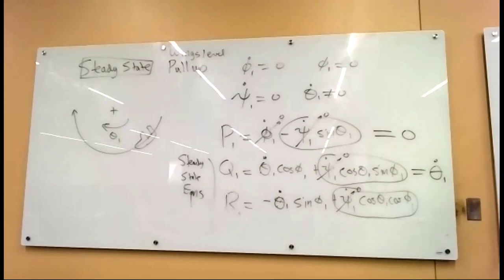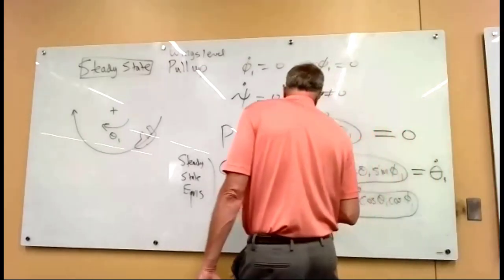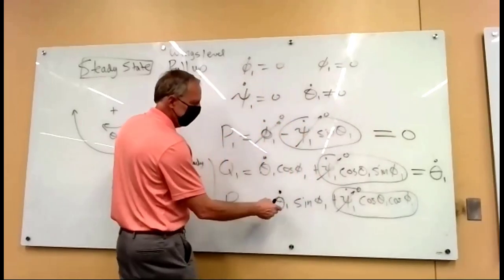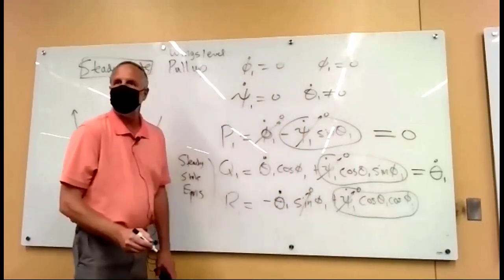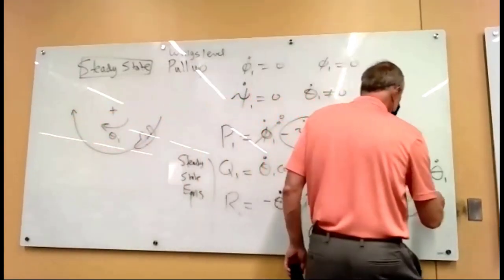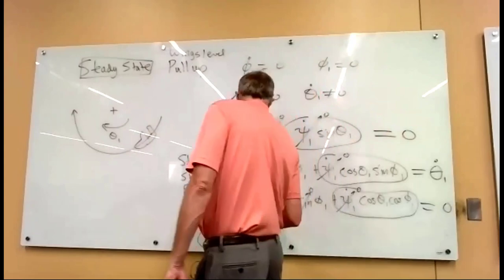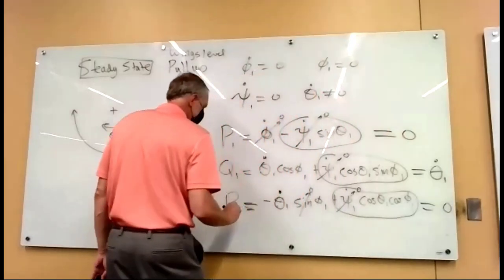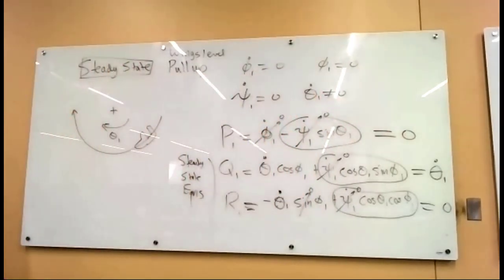And how about down here? Here's theta-dot. Now that's not zero, but if we're wings level, the sine is zero. So this is knocked out. So the body-fixed yaw rate R is zero. So this is really easy. All we have is Q.